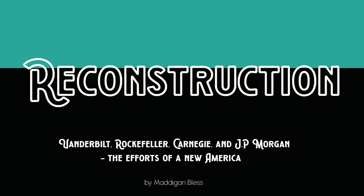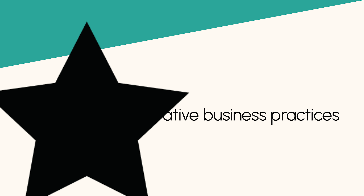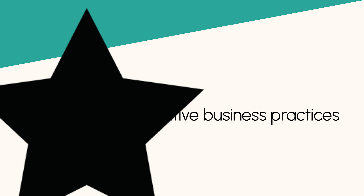During the Reconstruction era, following the American Civil War, four prominent business magnates played a significant role in shaping the United States' economy and society: John D. Rockefeller, Andrew Carnegie, Cornelius Vanderbilt, and J.P. Morgan. These industrialists were known for their innovative business practices, which transformed the nation's infrastructure and trade. Their influence is still felt today in modern-day America.